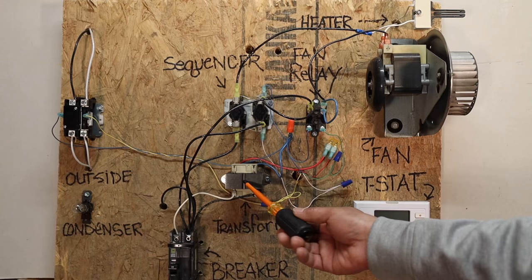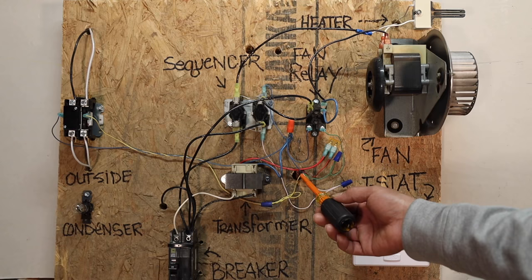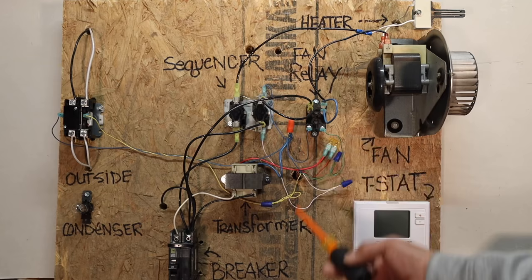Then we got your transformer, which transforms your main power supply to 24 volts so that it can be used to control your thermostat, your fan relay, your sequencer, your contactor, and all that other good stuff.